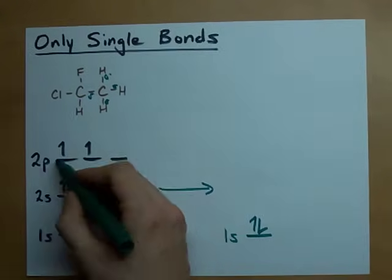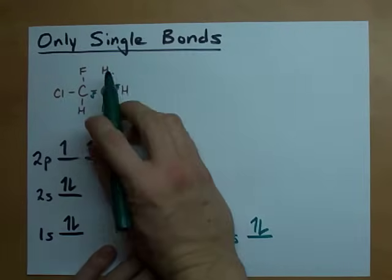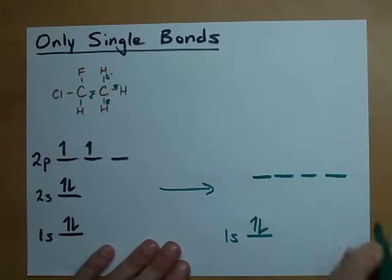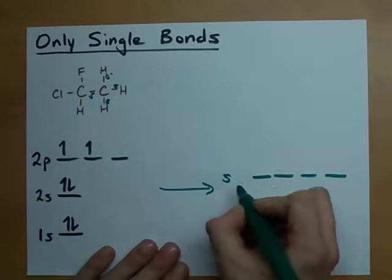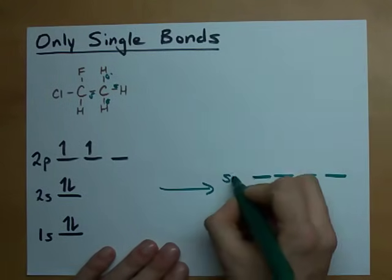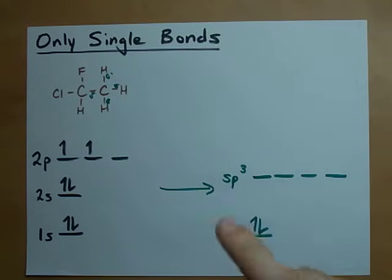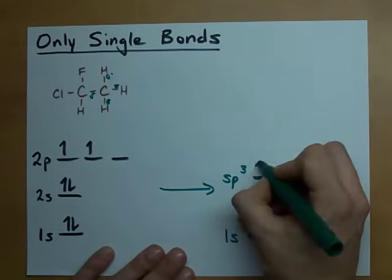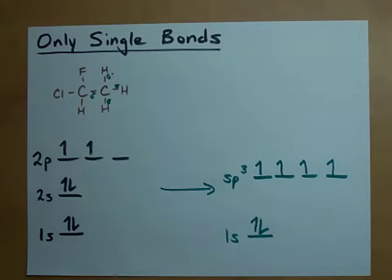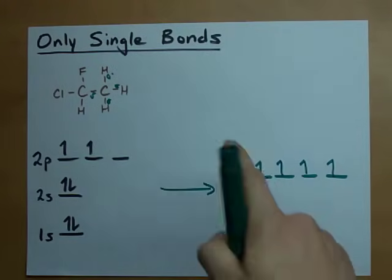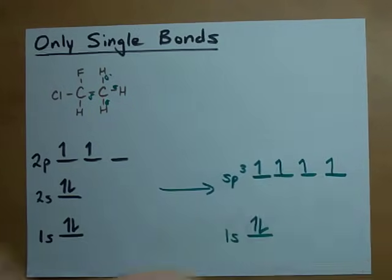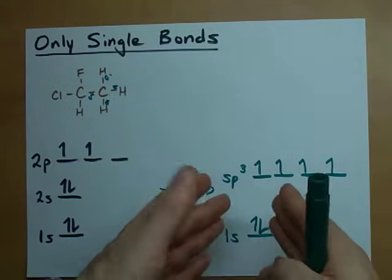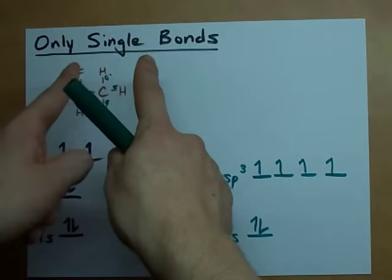But the 2s and the p's have to combine. In fact, we need 1, 2, 3, 4 sigma bonds. That requires an s, the 2s, and 3 p's. So we end up with four sp3 hybrid orbitals. We take our electrons, spread them out, and boy, isn't it just convenient that we now have room for 1, 2, 3, 4 bonds to be made.